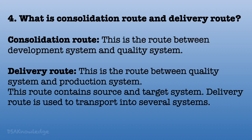What is Consolidation Route and Delivery Route? Consolidation Route is the route between the Development System and the Quality System. Delivery Route is the route between the Quality System and the Production System. This route contains a Source and Target System, and the Delivery Route is used to transport into several systems.